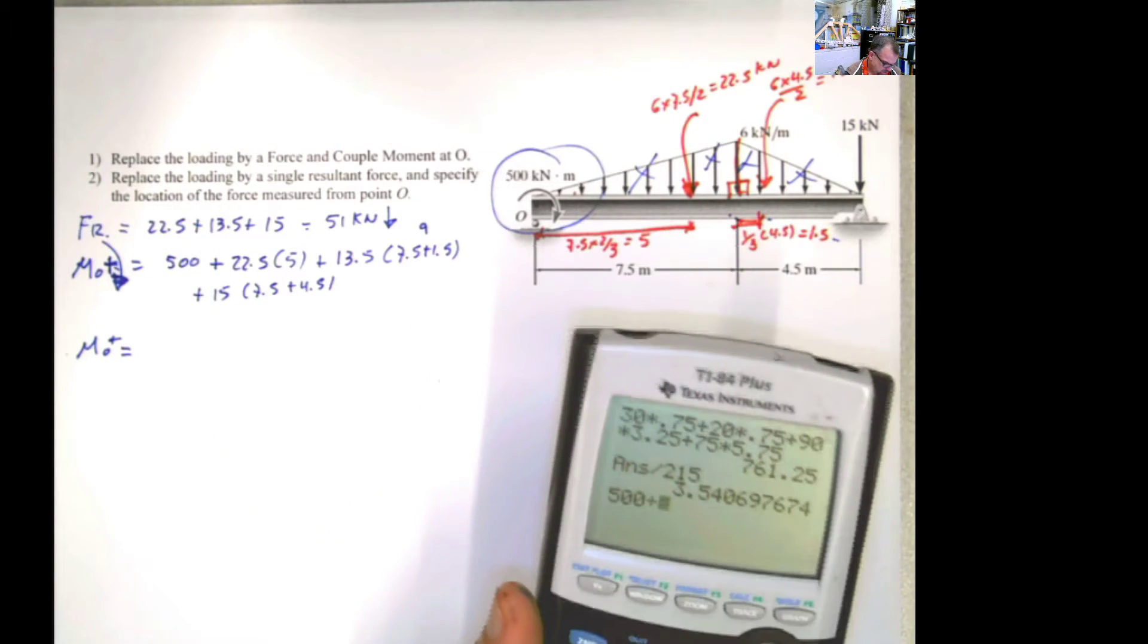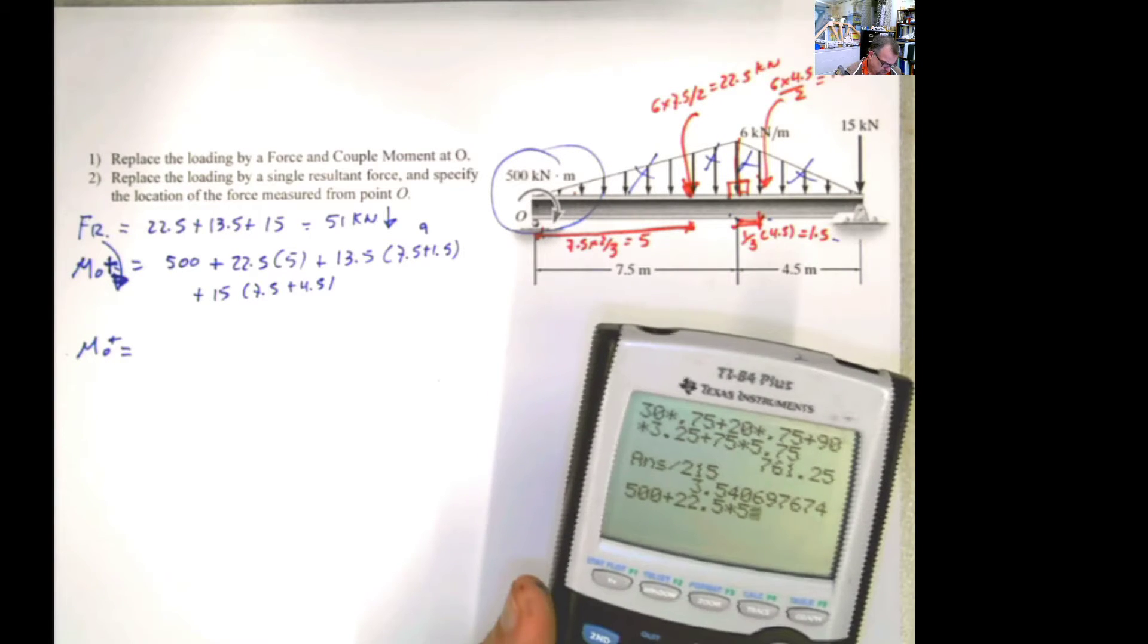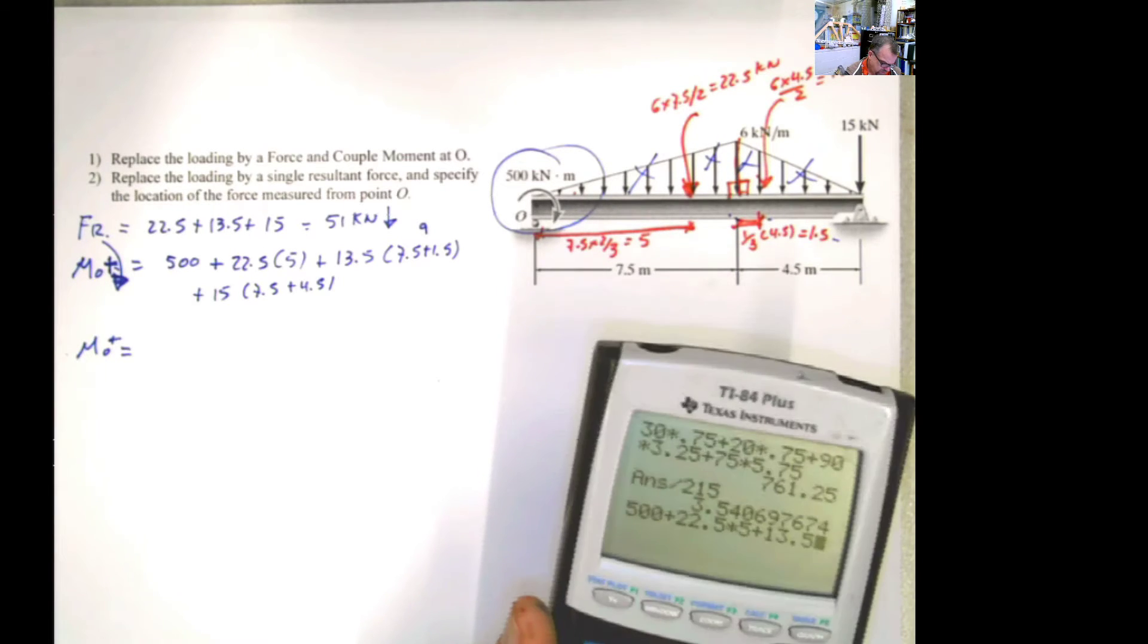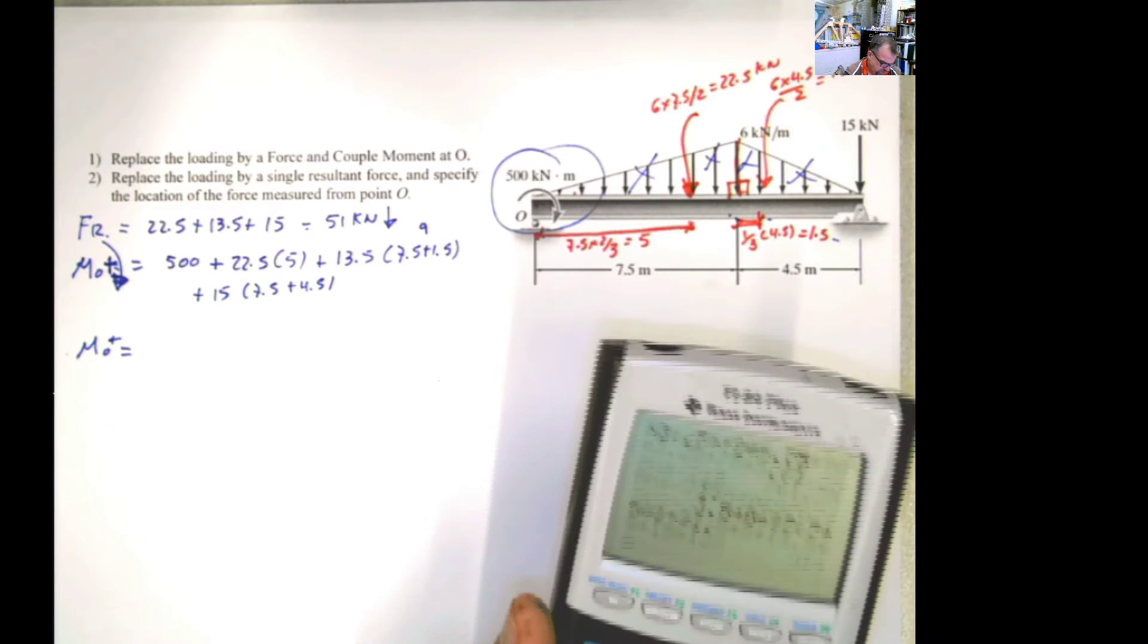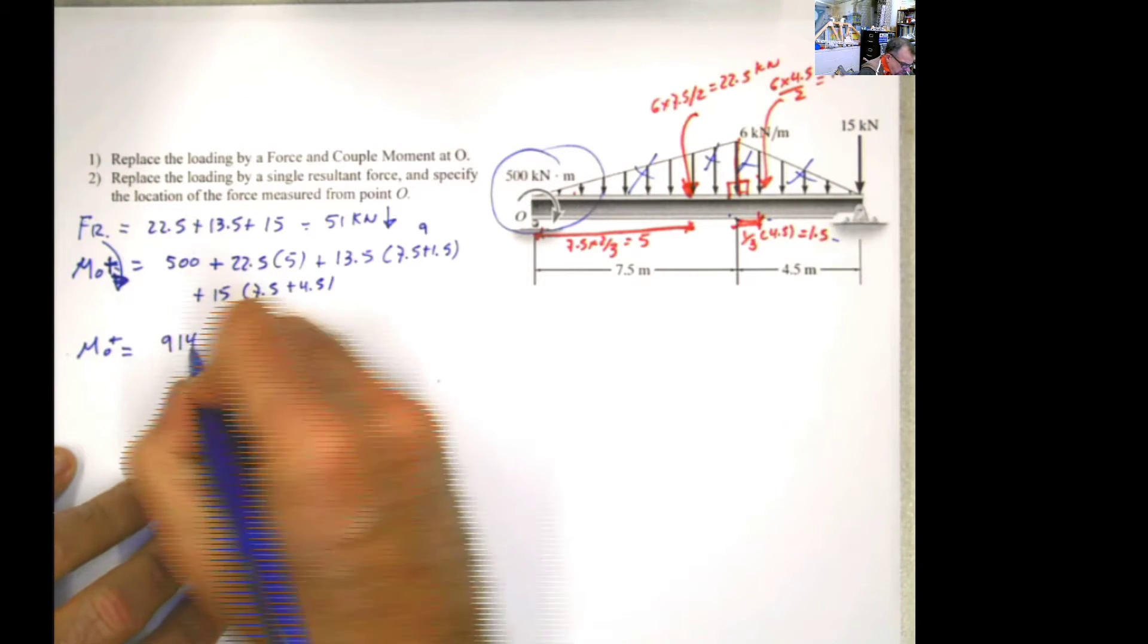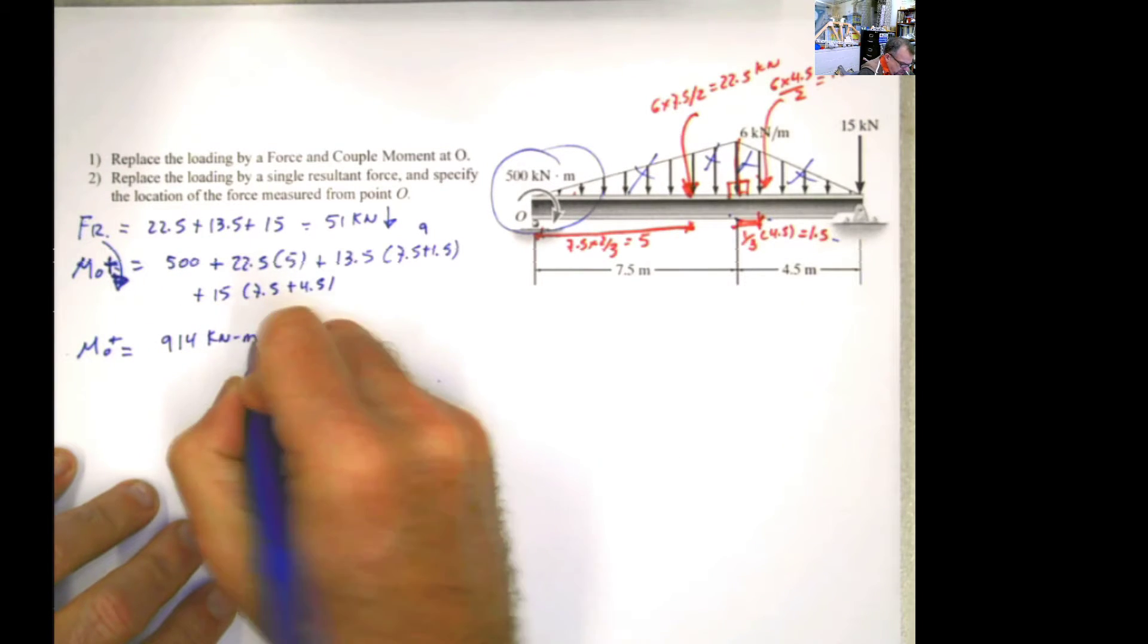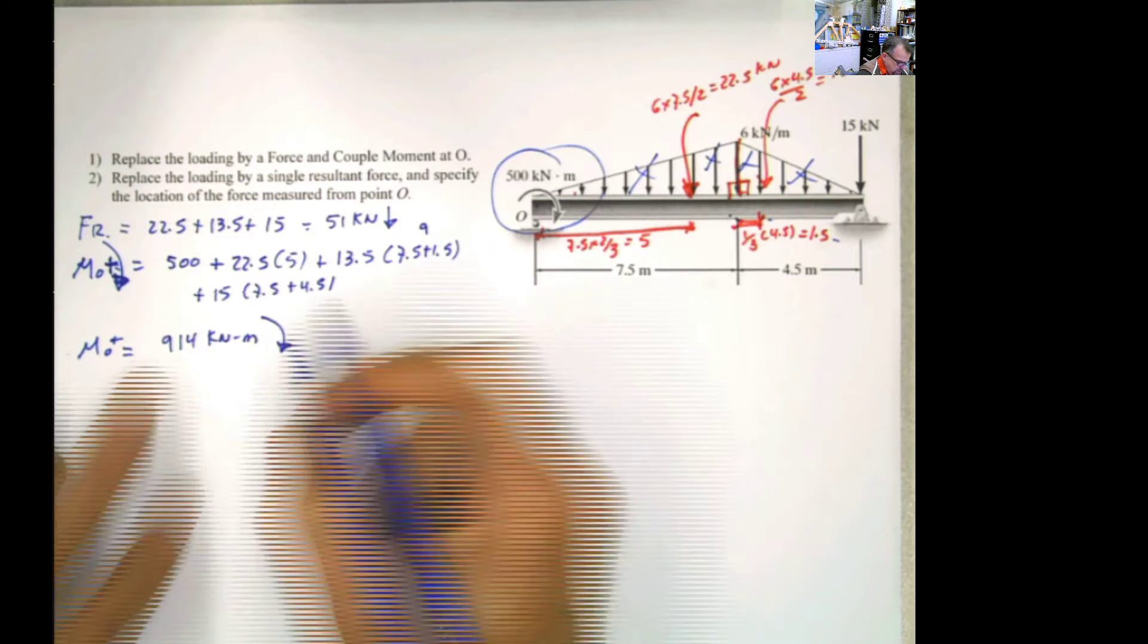590 plus 5 times 5 plus 13.5 times 9 plus 15 times 12 equals 914 kilonewton-meters acting this way because it's positive, meaning it's clockwise. So the first question is answered.